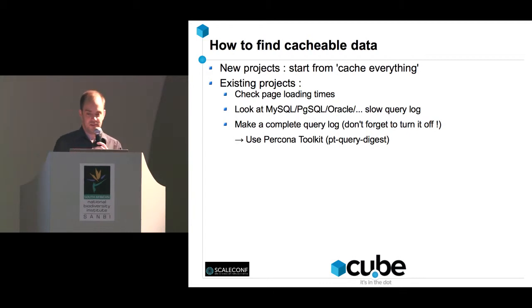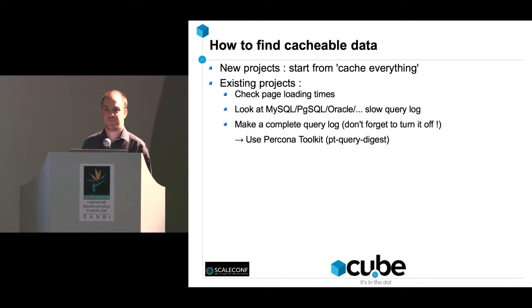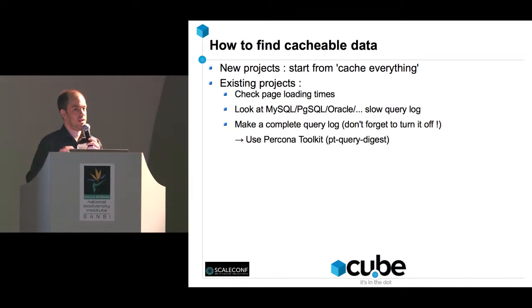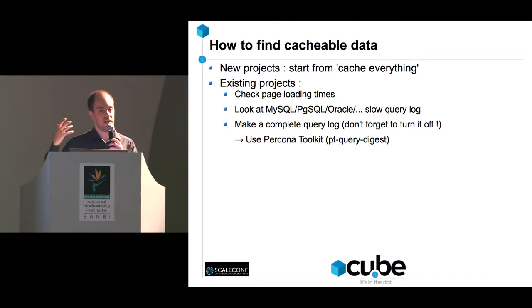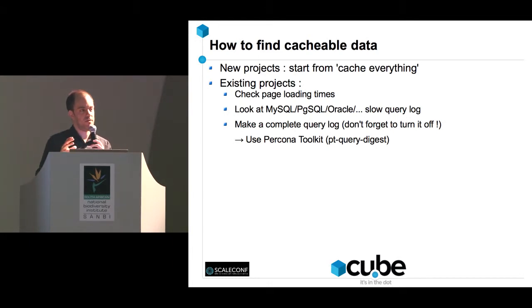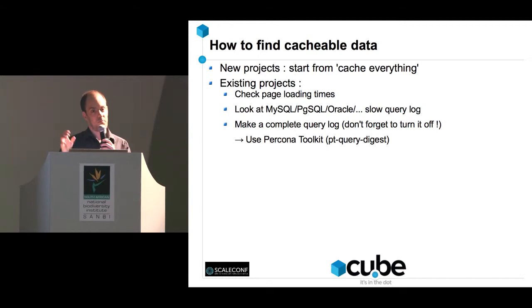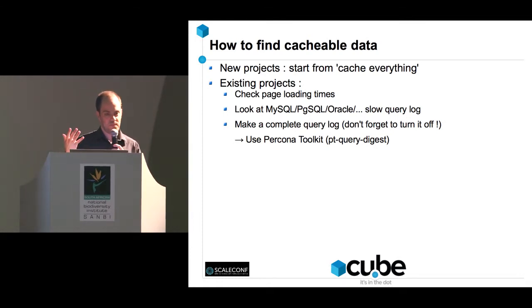The big question is how do you find cacheable data. Here's the first controversial thing: for new projects, we start from the principle of caching everything. Not because we think we'll actually need everything cached, but because when you build a caching layer you have to structure your code much better — you have to think about naming keys, how to access the cache. If you're a system engineer, tell your developers to cache everything because it will just create better code in the end.